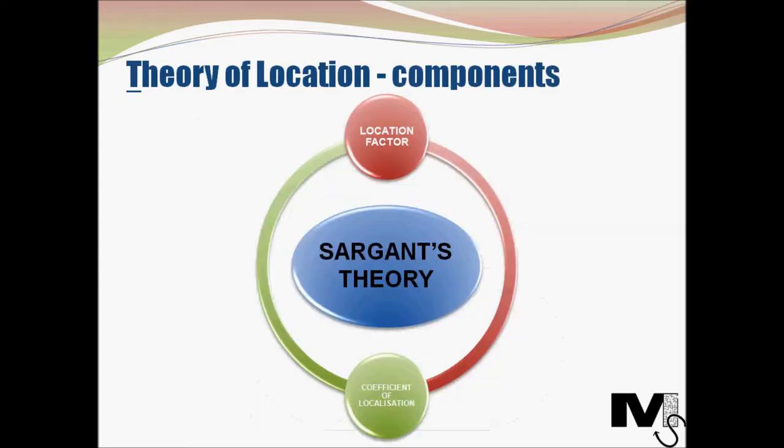Now let's look at the key concepts in the theory. What are the components of this theory of location? After looking into statistical data, Sargent came up with two different unique new concepts: Location Factor and Coefficient of Localization.